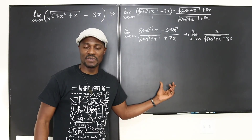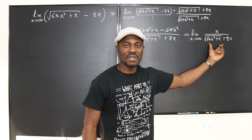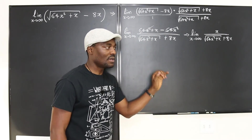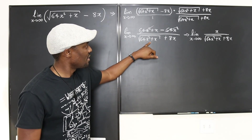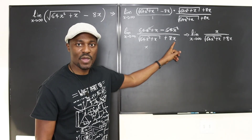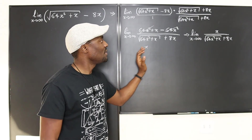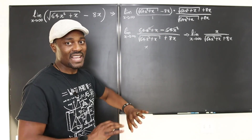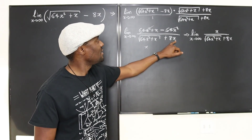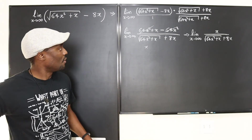We're almost at the end. Focus on the denominator — what is the highest power of x in the denominator? Looking at √(64x²), when you take the square root of x², you get x. That's the same as the 8x term, so the highest power of x in the denominator is just x to the first. That is what you want to divide both the numerator and denominator by.